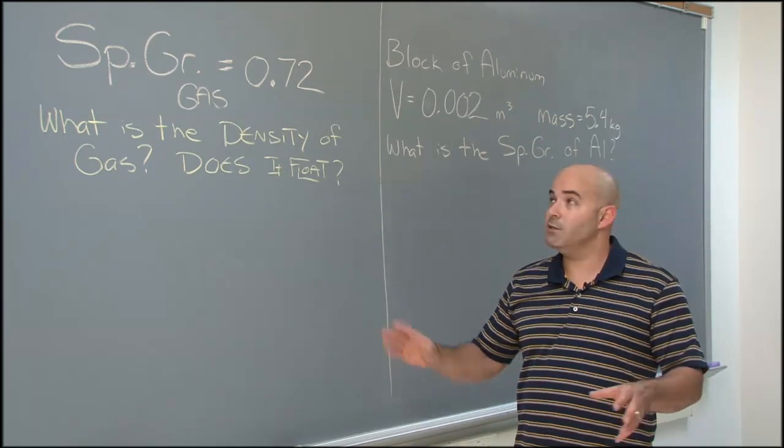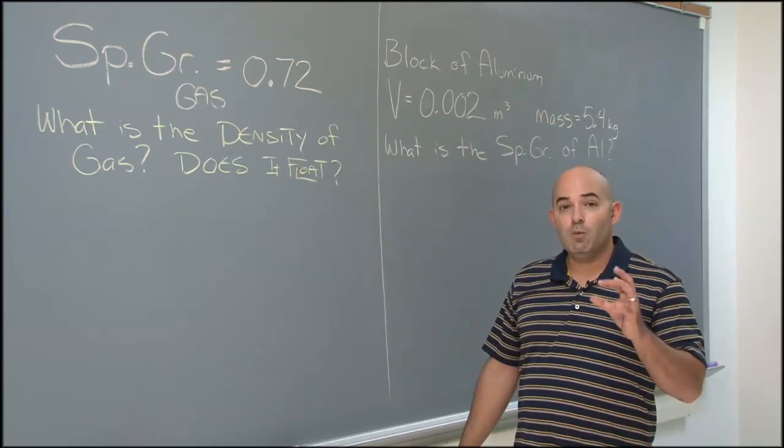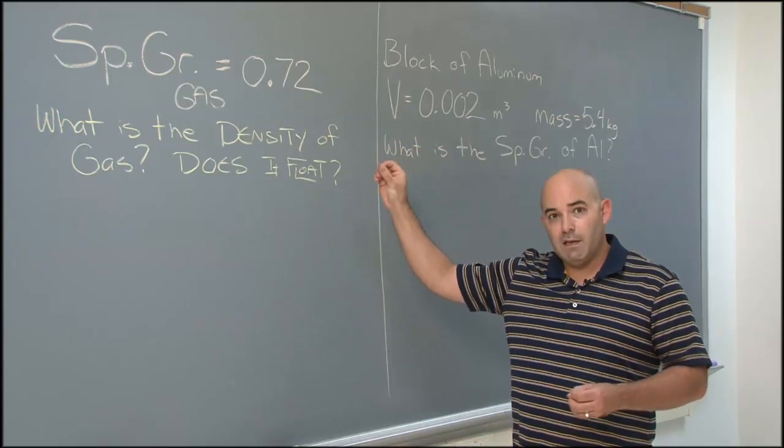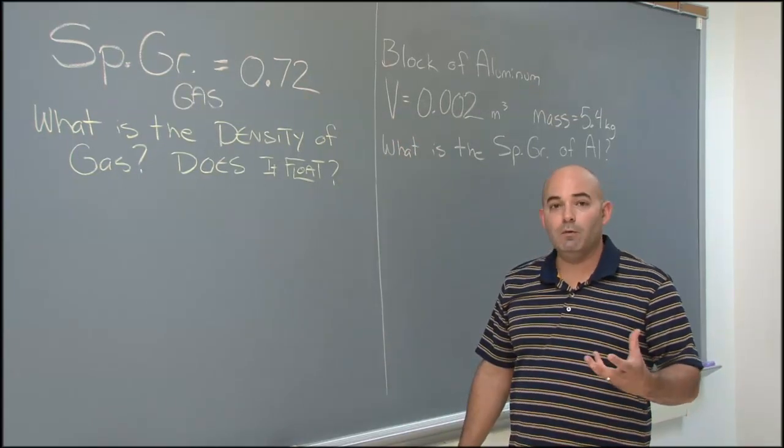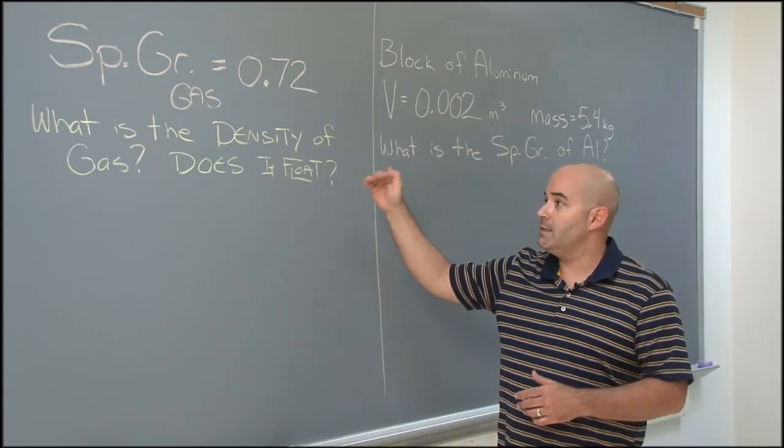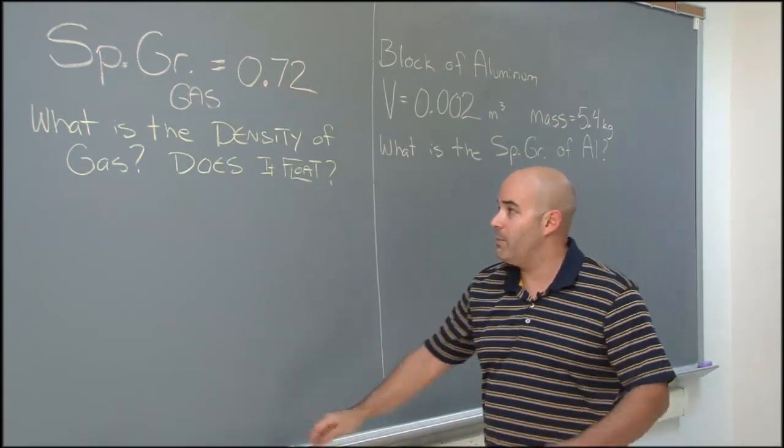We don't even need to do a calculation to figure out whether or not it floats or sinks. We should be able to figure it out already. If it's got a specific gravity less than one, it should float. 0.72, it's less than one. We should expect this to float and thus its density should be less than water. Let's see what happens.